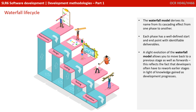The waterfall model is one of the oldest and it derives its name from the cascading effect from one phase to another. Each phase has a well-defined start and end point with identifiable deliverables. A slight evolution allows you to move back to a previous stage as well as forwards, reflecting the fact that developers often have to rework earlier stages in light of experience gained as development progresses.